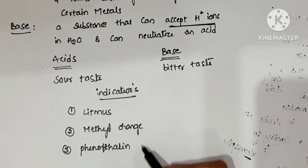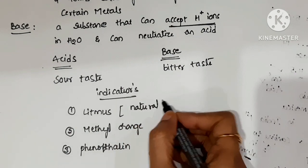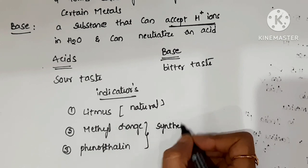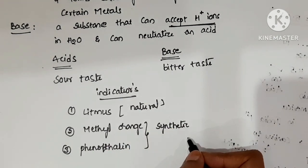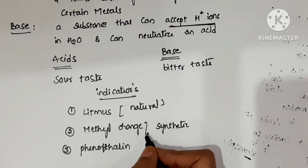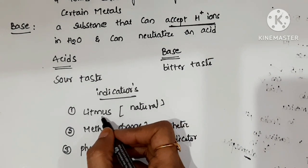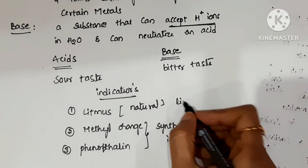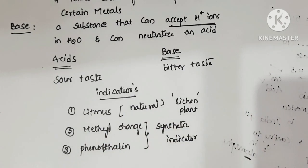Litmus is a natural indicator, while methyl orange and phenolphthalein are synthetic indicators — that means man-made, prepared in laboratories. Litmus is extracted from the lichen plant, so it is a natural indicator.